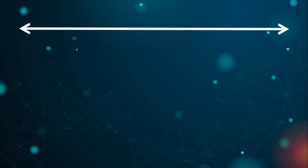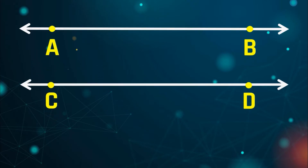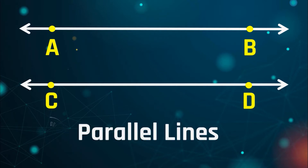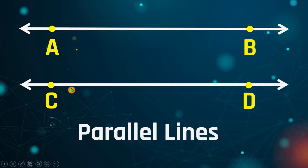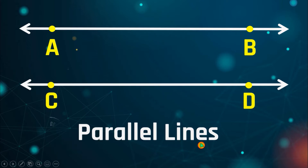The first kind of line is what we call parallel lines. Parallel lines are two lines that are extended infinitely in opposite directions but they will never intersect with each other. You can see here that line AB and line CD are extending infinitely in opposite directions, however they do not intersect.